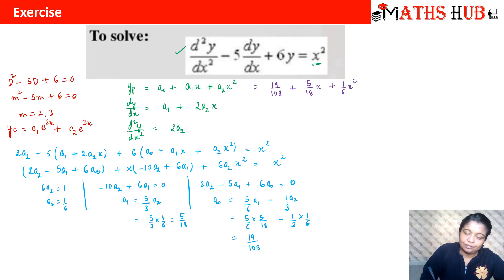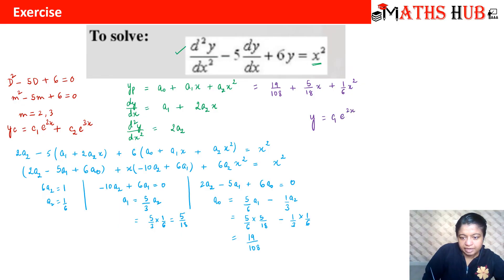The final general solution is y = yc + yp = c1·e^(2x) + c2·e^(3x) + 19/108 + (5/18)x + x²/6. That is our final answer.